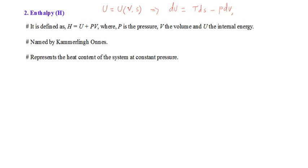From this relation, two partial derivative equations were derived: T = (∂U/∂S) at constant volume, and pressure P = −(∂U/∂V) keeping entropy S constant.